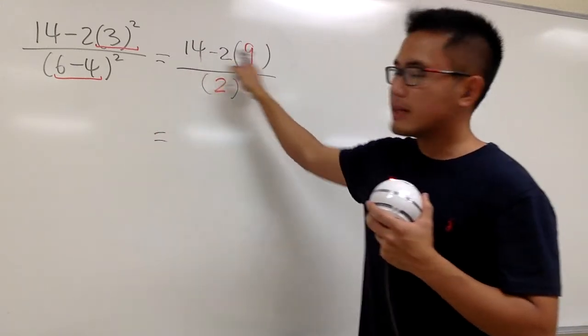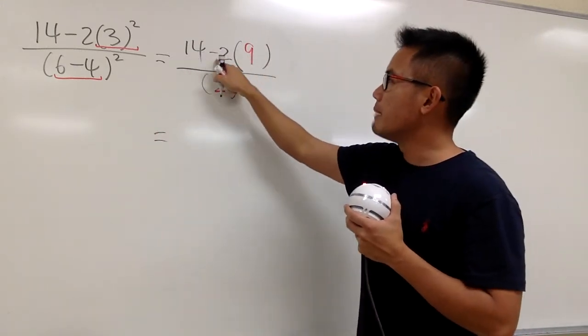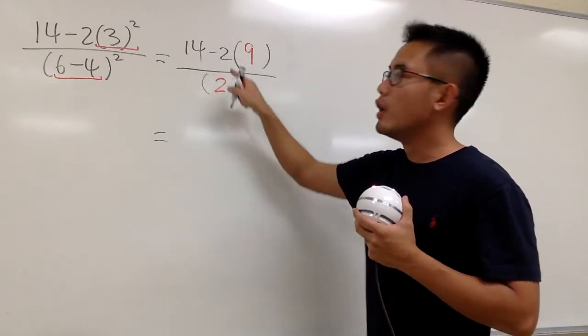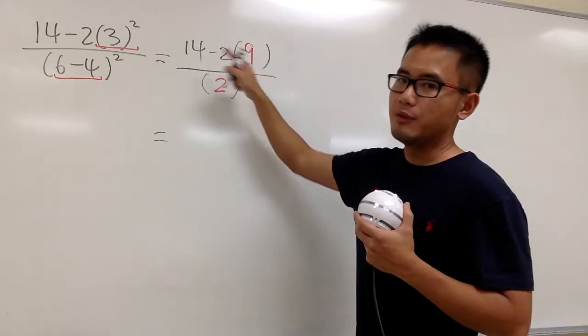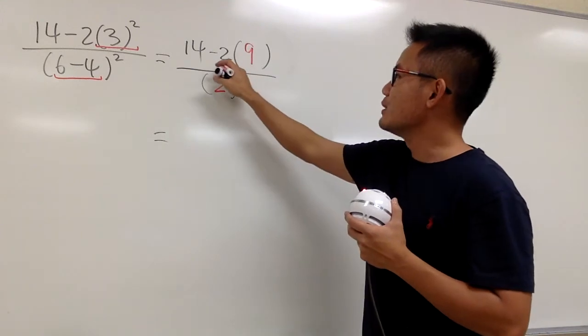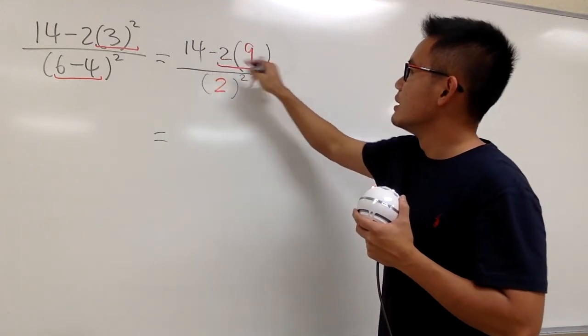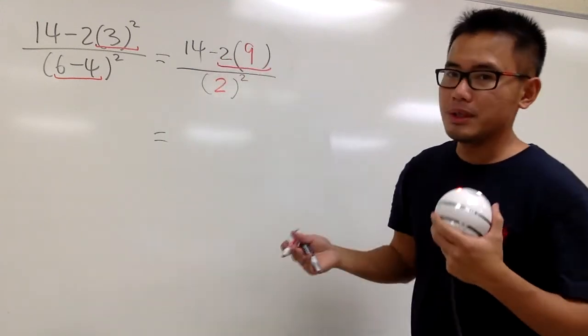And now, on the top, we have 14 minus 2 times 9. We have to multiply first before we can subtract. So look at, this is negative 2 times 9, so it's going to be minus 18.